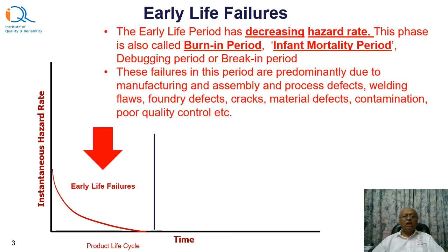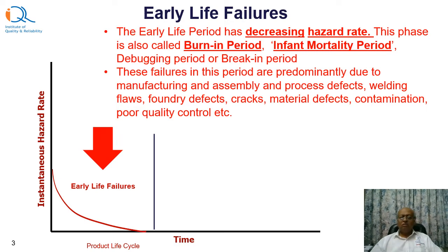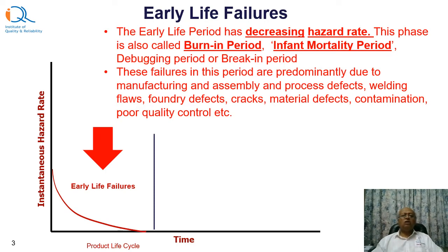The failures during the early life period are predominantly due to manufacturing, assembly, and process defects. These could include welding flaws, boundary defects, cracks, material defects, contamination, or poor quality control. So the defects that occur during manufacturing and do not get captured in the manufacturing inspection or final inspection would actually pass on to the customer.